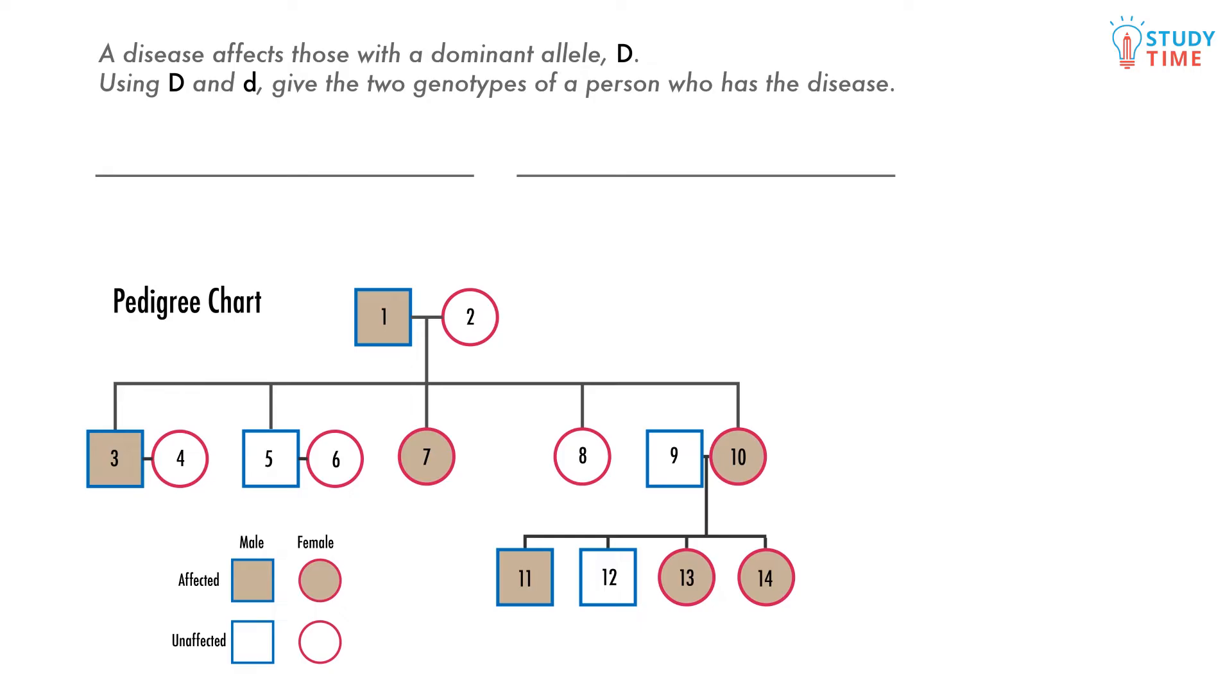This question asks us about a disease that is passed on by the dominant allele, shown by an uppercase D. Using big D and little d gives the two genotypes of a person who has the disease.